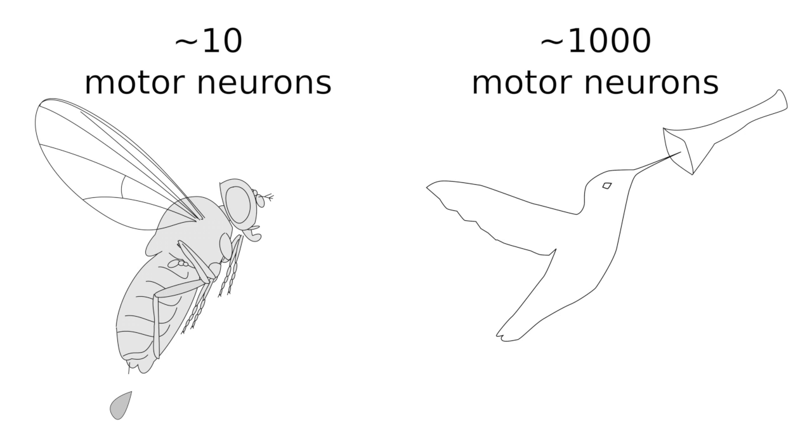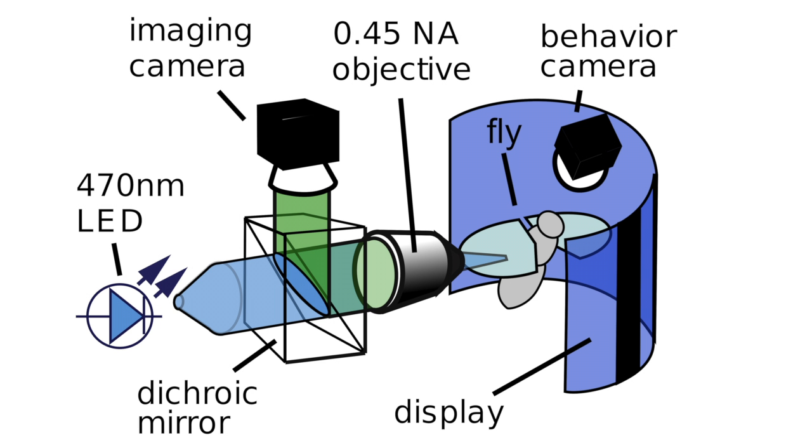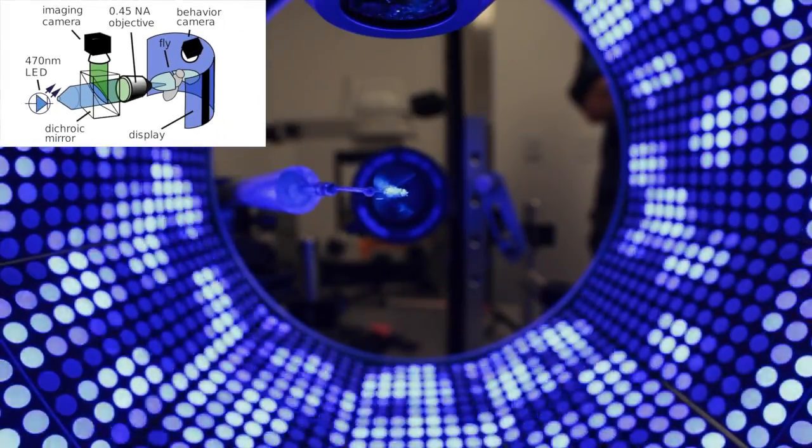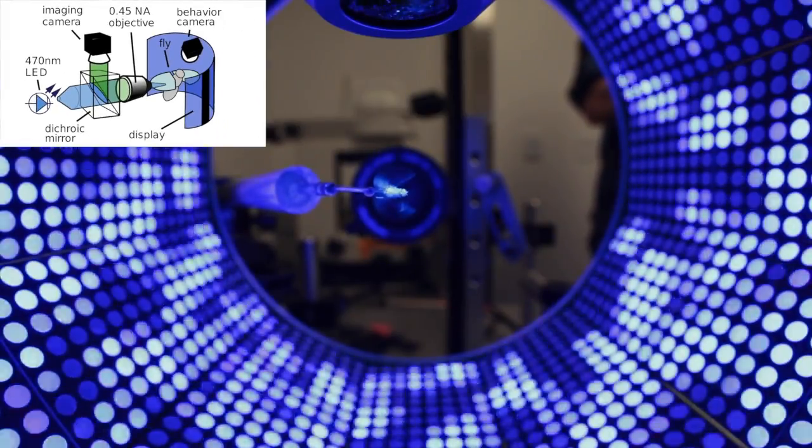The purpose of our study was to understand how flies can maneuver so accurately while using such a small set of neurons to control their wings. To help answer this question, we took advantage of genetically modified fruit flies that express a protein in their wing muscles that emits light when the muscles are active.